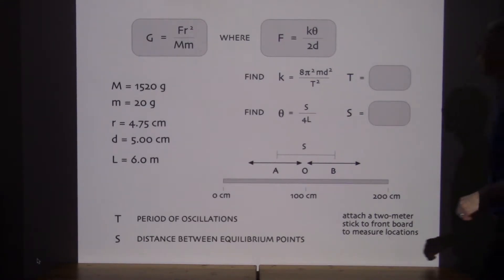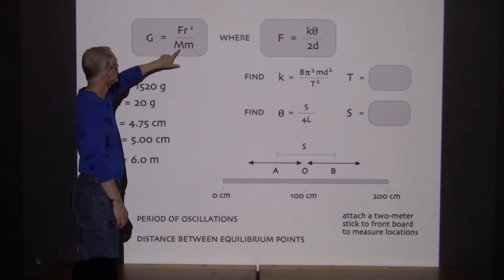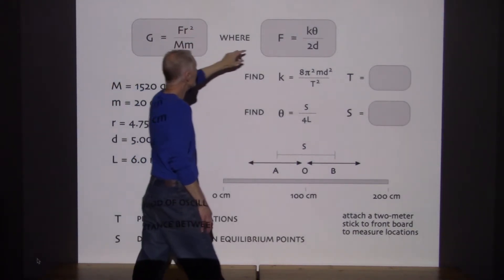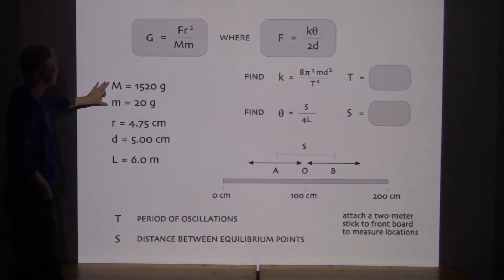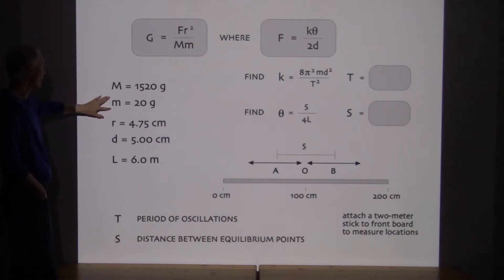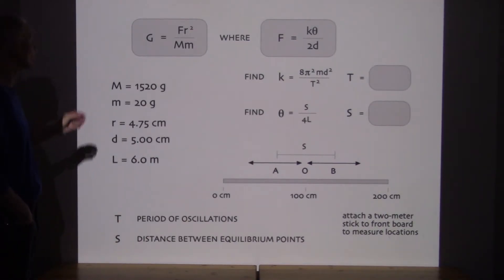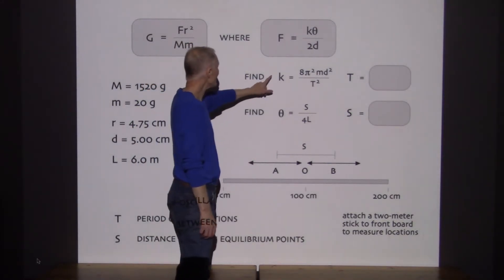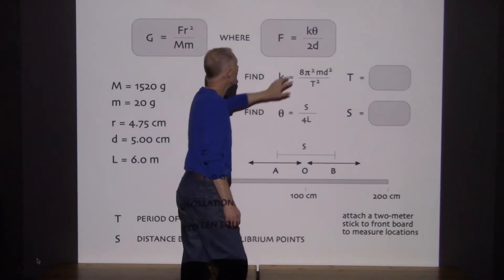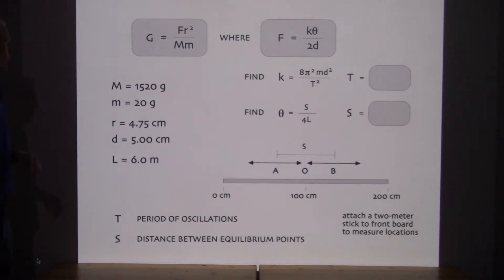Flipping around the gravitational formula, the gravitational constant G equals F times r² over m times M. And F is measurable from k times theta divided by 2d. The masses have been measured — 1520 grams and 20 grams. r has been measured at 4.75 centimeters, d is 5.00 centimeters, and l is 6 meters. So if we can get k and theta determined, we already know d, we can solve for F, plug it in, and we're done. The formulas are pretty straightforward.